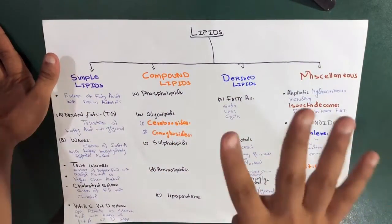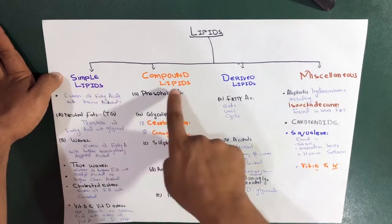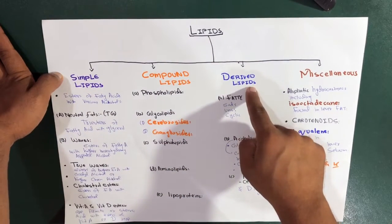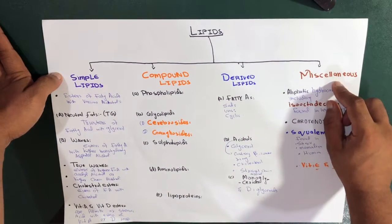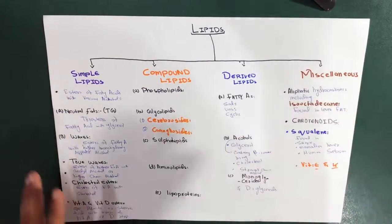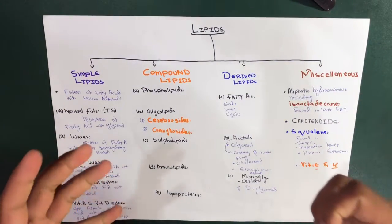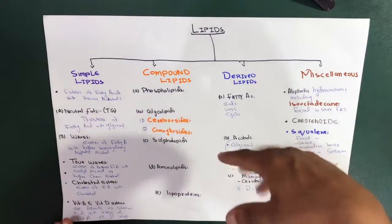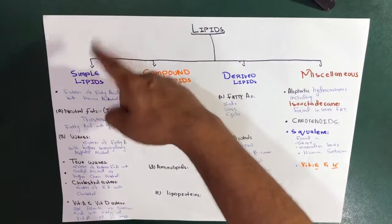Lipids are actually divided into four groups: simple lipids, compound lipids, derived lipids, and miscellaneous. It's really easy to understand — just focus on how I'm going to classify them.